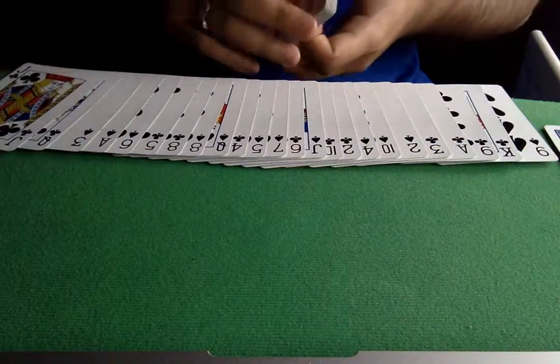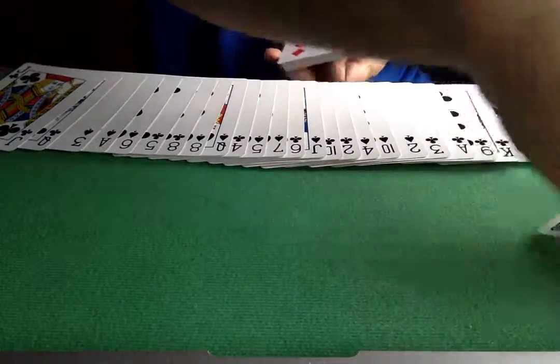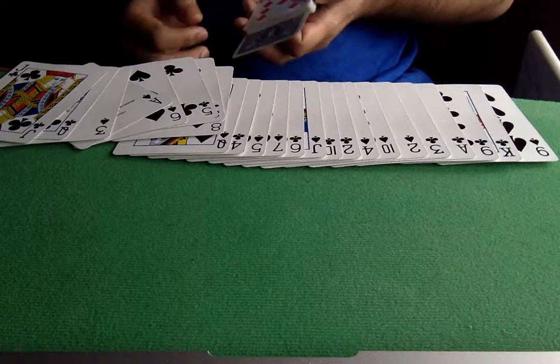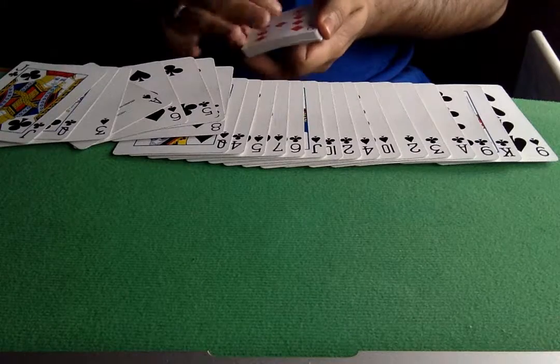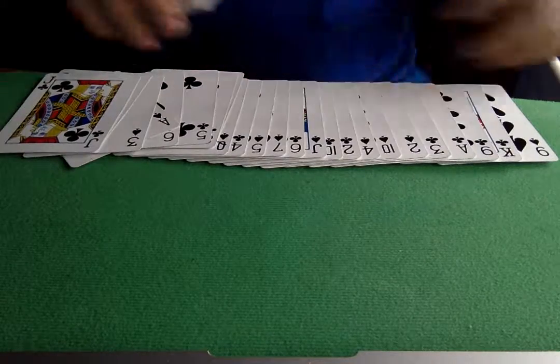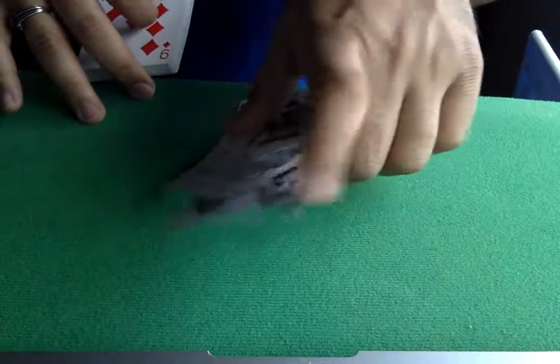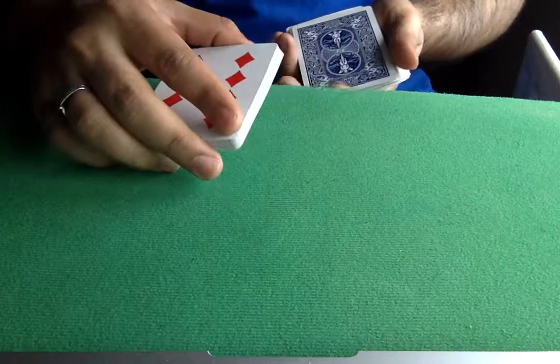Let's scoop up the red cards and we'll get the phantom card. We'll insert it somewhere here. I don't know if you can see this. The phantom card goes in there and we'll scoop up the black cards.